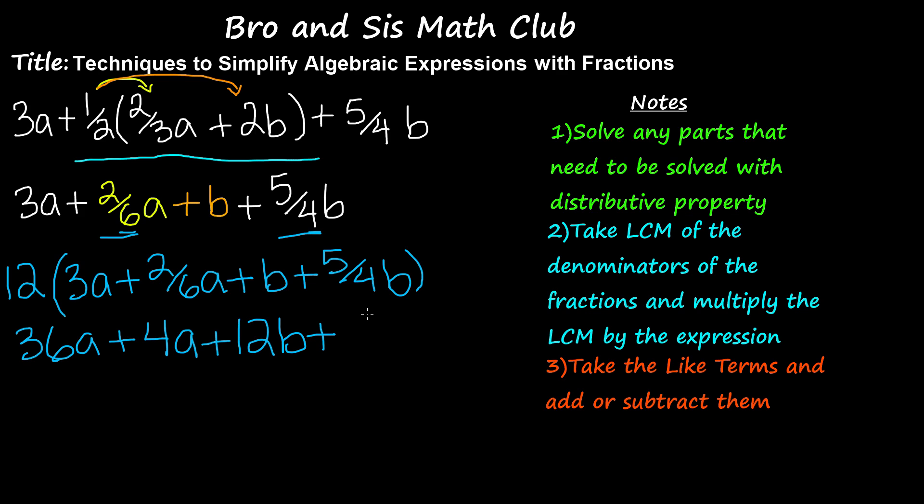When you multiply 12 by 5 fourths B, then you will get 12 times 5 is 60, 60 divided by 4 is 15, so 15B. Now that you have the whole expression...